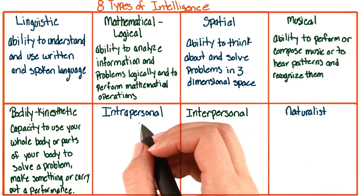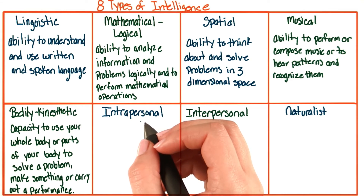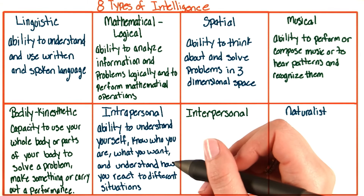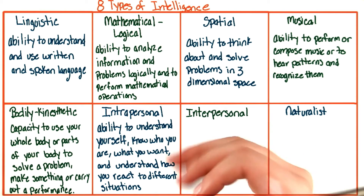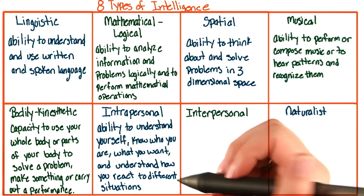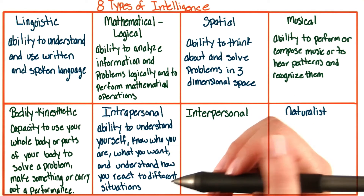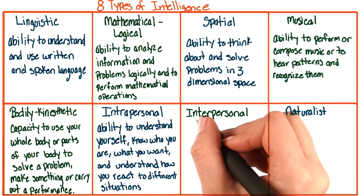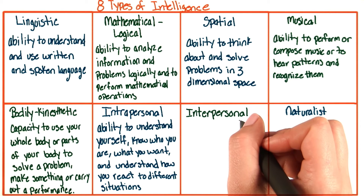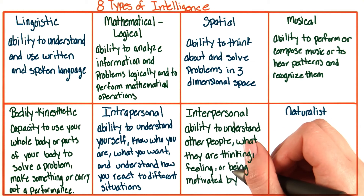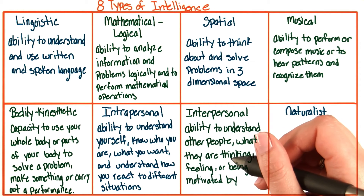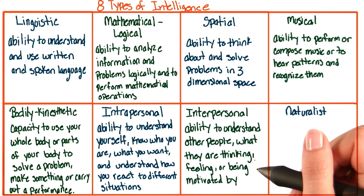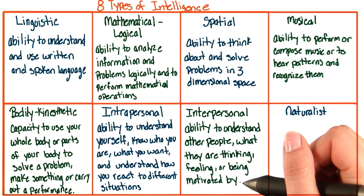Next, we have our intrapersonal intelligence. This is the ability to understand yourself — know who you are, what you want, and understand how you're going to react to different situations. Your interpersonal intelligence is your ability to understand other people: what they're thinking, what they're feeling, or what they're being motivated by.